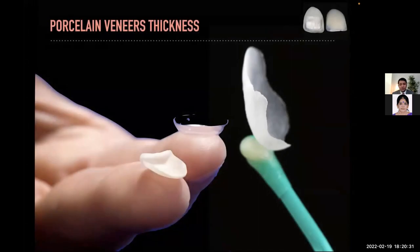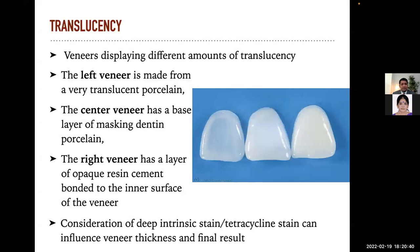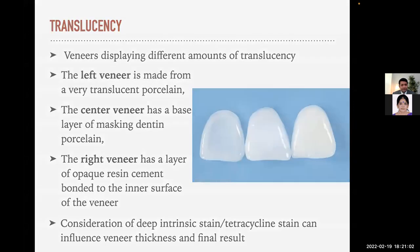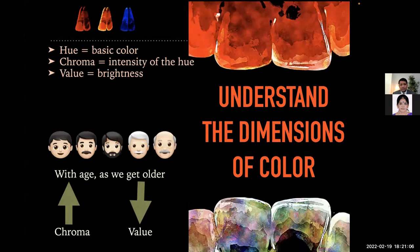As you can see here, the thickness of veneers is as thin as your contact lens. Veneers display different amounts of translucency: the left veneer is made from very translucent porcelain, the central veneer has a base layer of masking dentine porcelain, and the right veneer has an opaque layer resin cement bonded to the inner surface. Deep intrinsic tetracycline stain can influence veneer thickness and the final result. To select a shade, we need to understand the dimensions of color: hue, value, and chroma. In natural teeth with age, chroma increases and value decreases. If you are confused between A2 and A3 shade, always choose A2 because you can make A3 from A2, but you cannot go from A3 to A2. Always discuss the shade before the preparation.